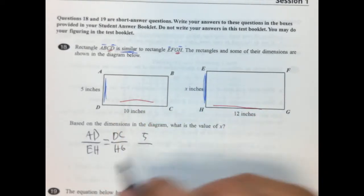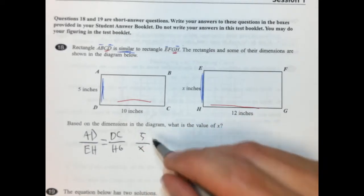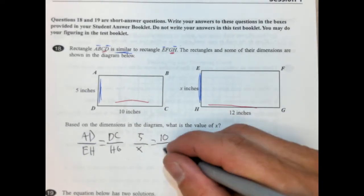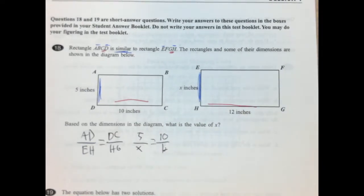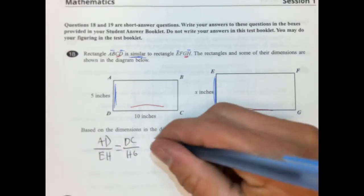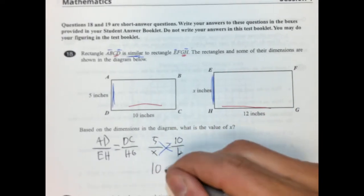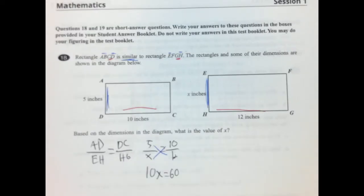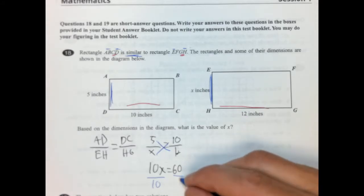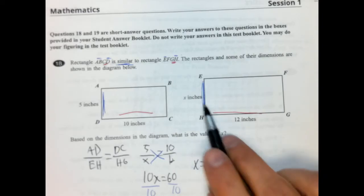Okay, let's just plug these in. So AD is 5, EH is X, and DC is 10, and HG is 12. Okay, so we have our proportions set up. Now let's cross multiply and solve. So X times 10 is 10X, 5 times 12 is 60. Divide both sides by our coefficient, which in this case is 10. And X would be equal to 6 inches, it looks like. Yep, inches.